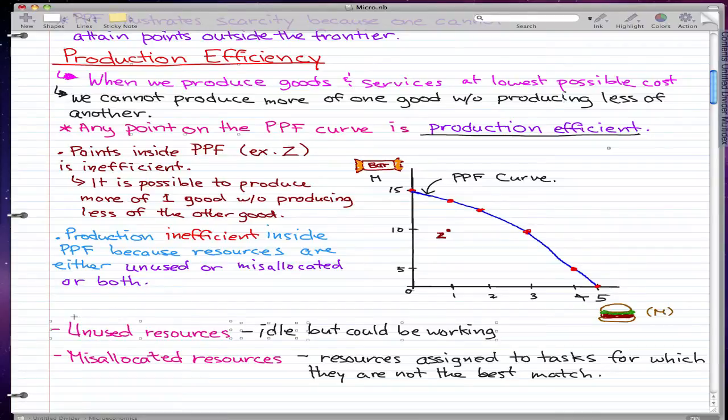Resources that are idle or just standing around but could be working. Misallocated resources are resources assigned to tasks for which they are not the best match.